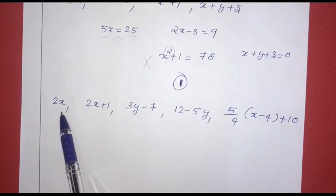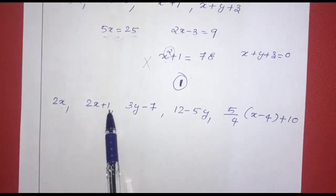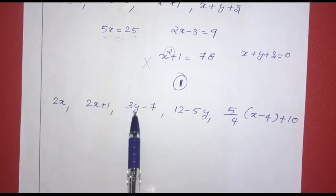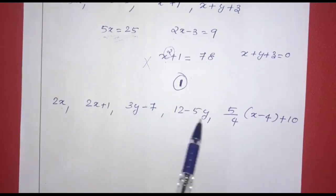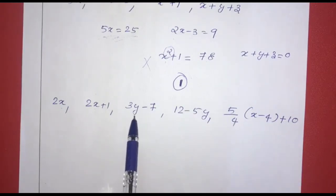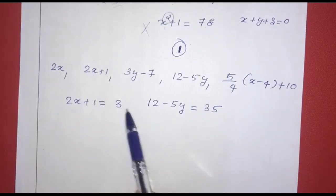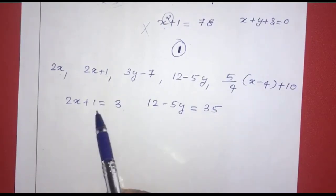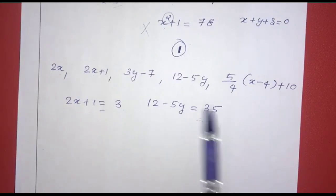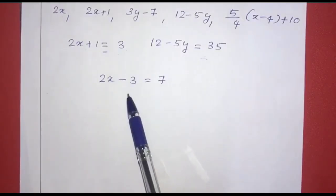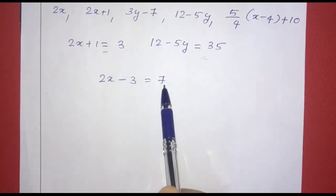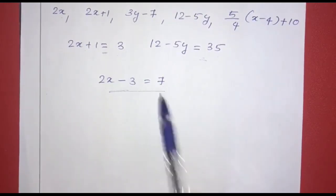In our examples, we have 2x — here, the variable x has the highest power of 1. 2x plus 1 — the variable has the highest power of 1. 3y minus 7 — in y, the expression has the highest power of 1. These are linear expressions. For linear equations, we write: 2x plus 1 is equal to 3, and 2l minus 5y is equal to 35. There is also an equal to sign. Another example is 2x minus 3 is equal to 7 — this is a linear equation in one variable.